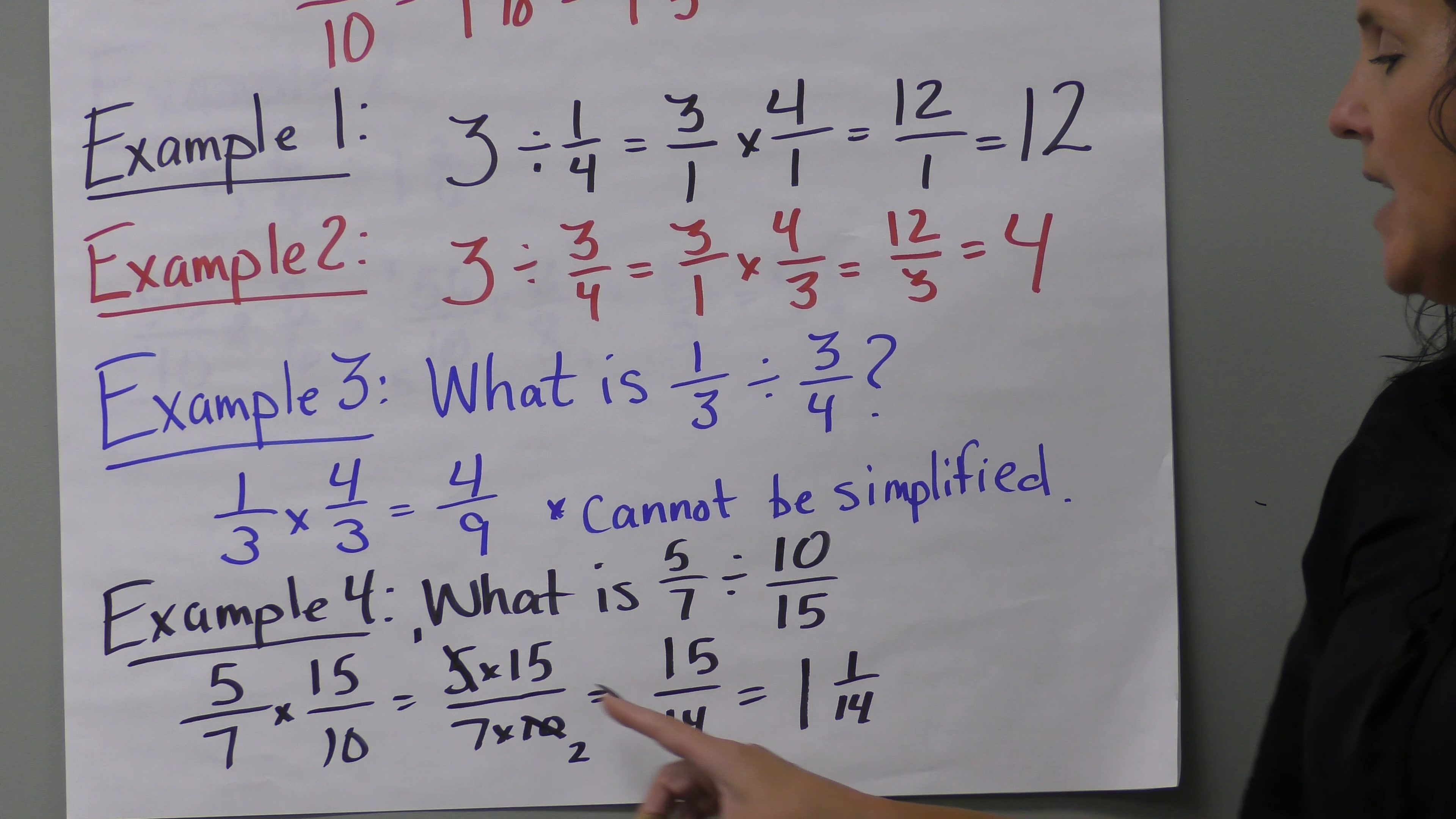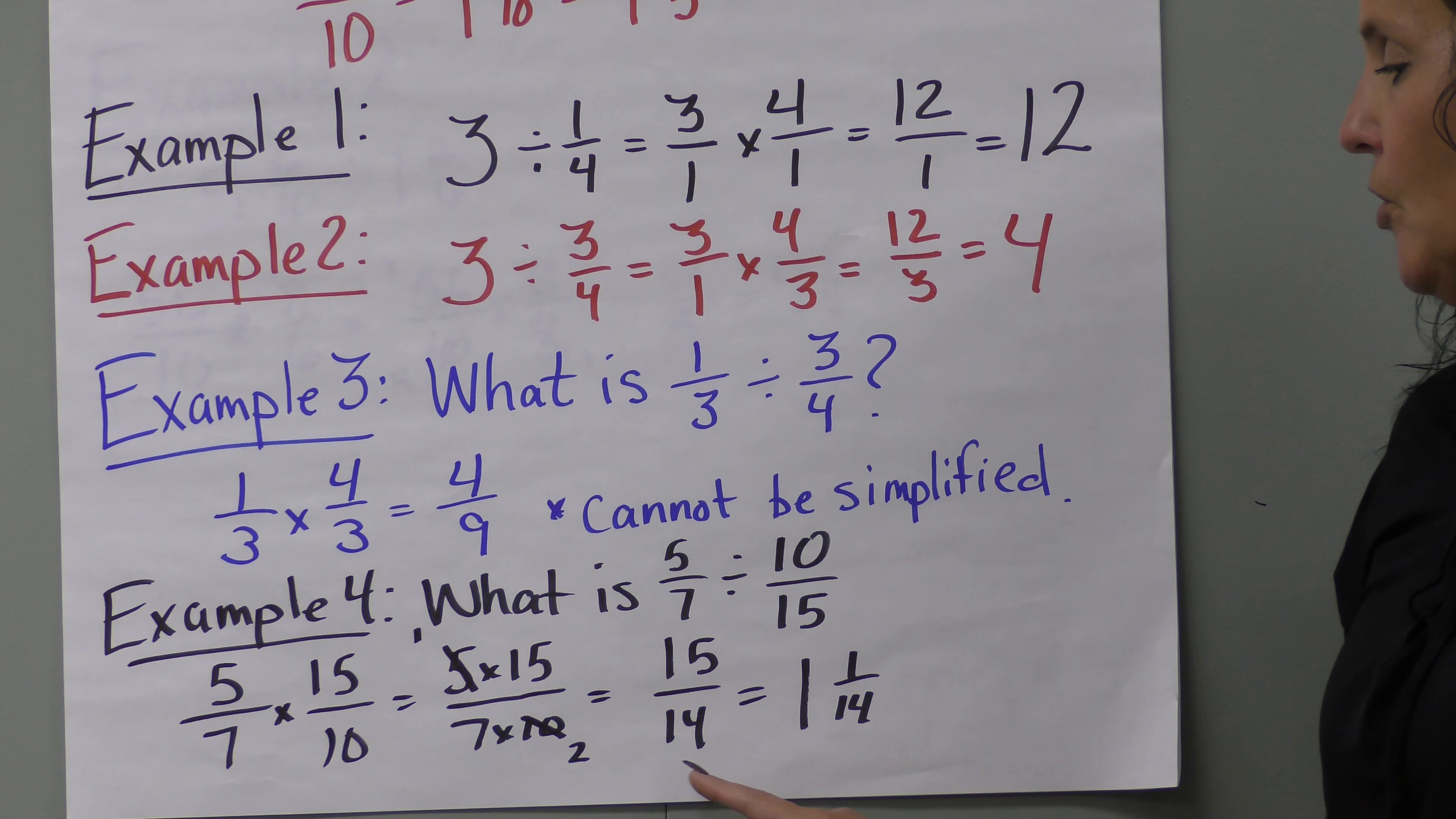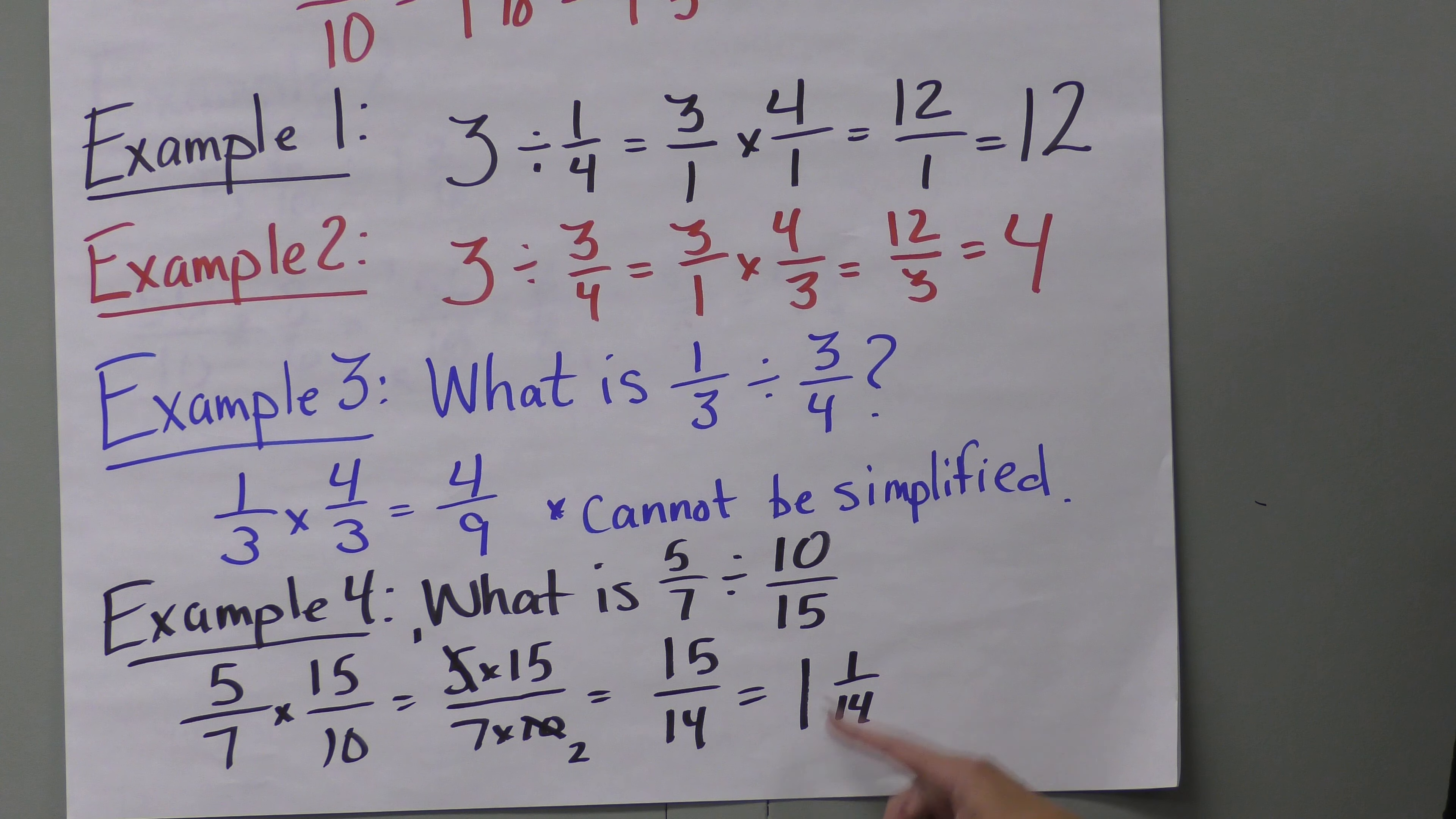We multiply one times fifteen to get fifteen, and seven times two to get fourteen. That's an improper fraction, so fourteen goes into fifteen once with one left over. Our answer is one and one-fourteenth.